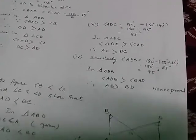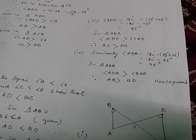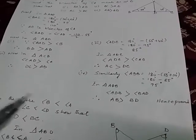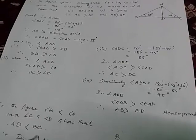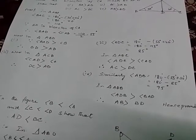Similarly in triangle ADB, 180 minus 55 plus 30. 180 minus 85 is equal to 95. So in triangle ADB, angle ADB is greater than angle BAD. So AB is greater than BD. Hence proved.